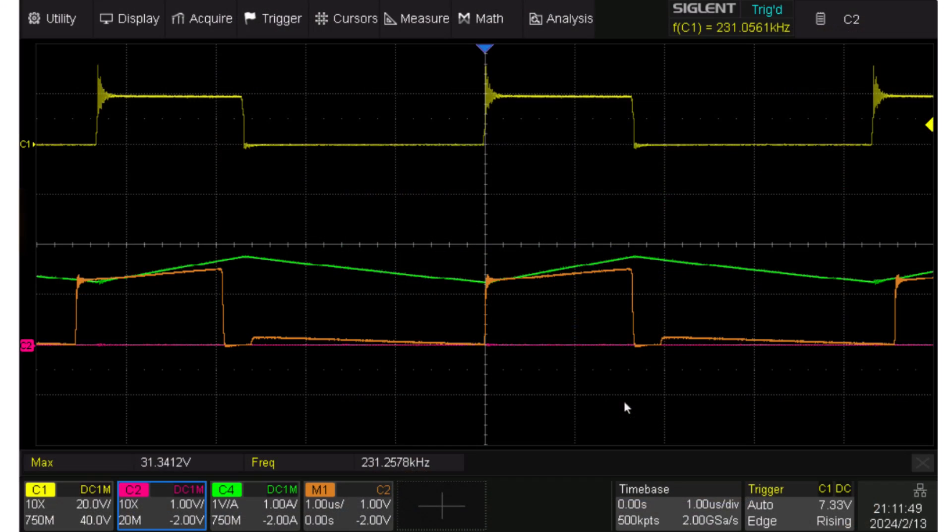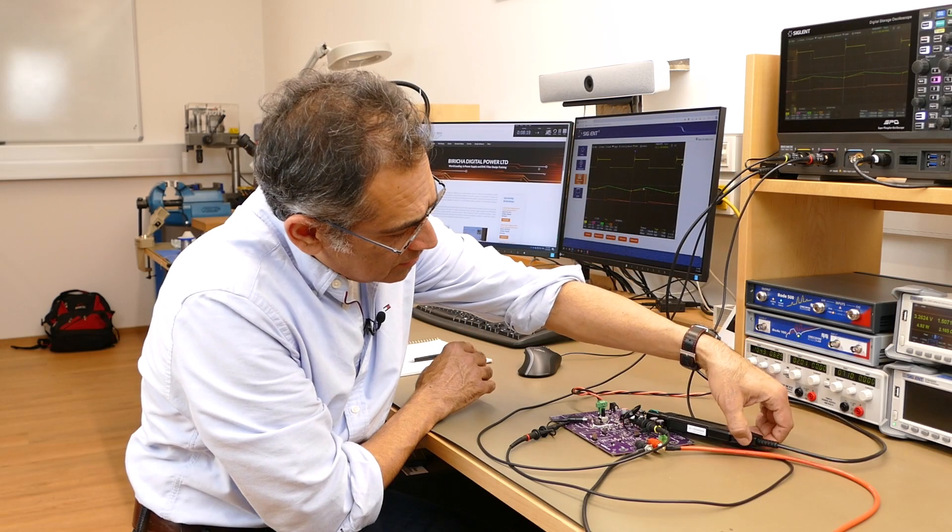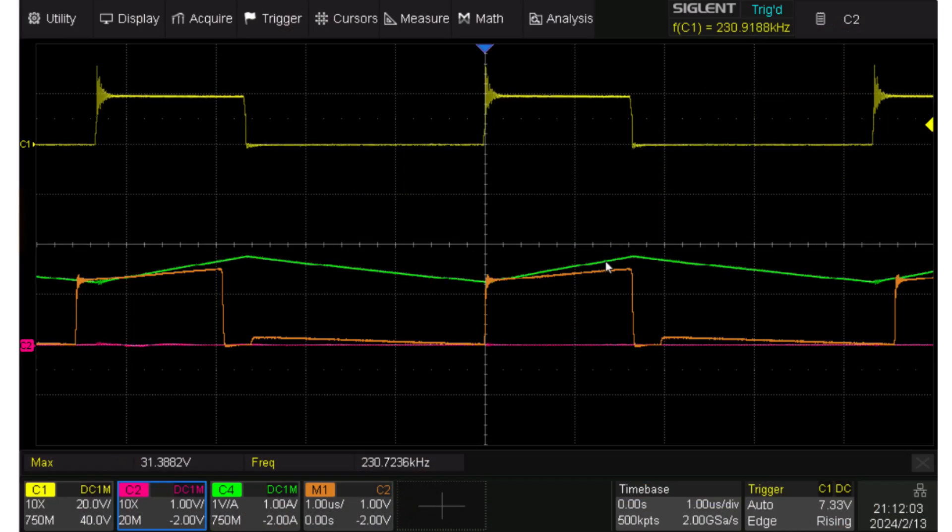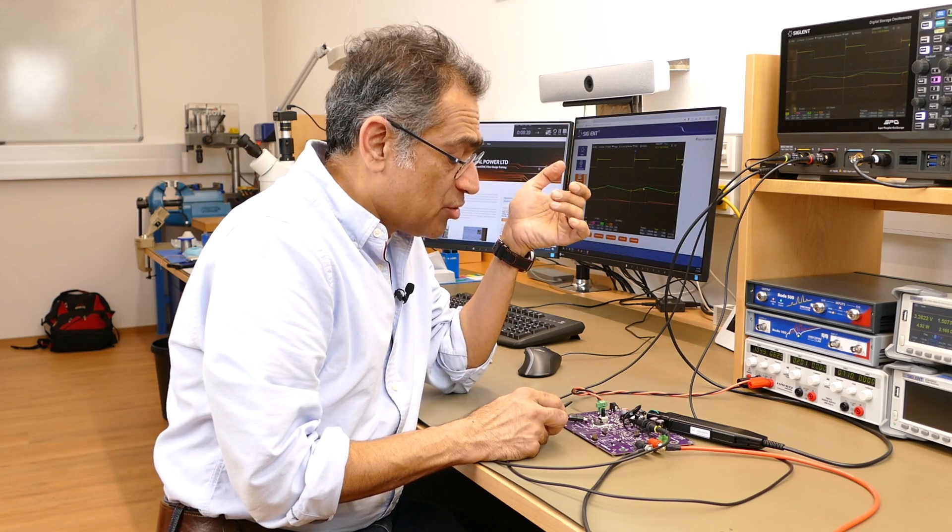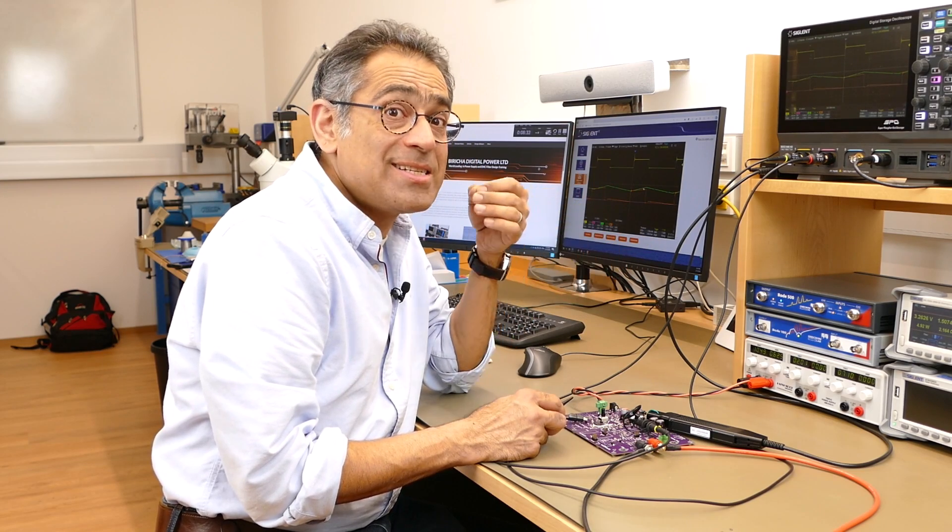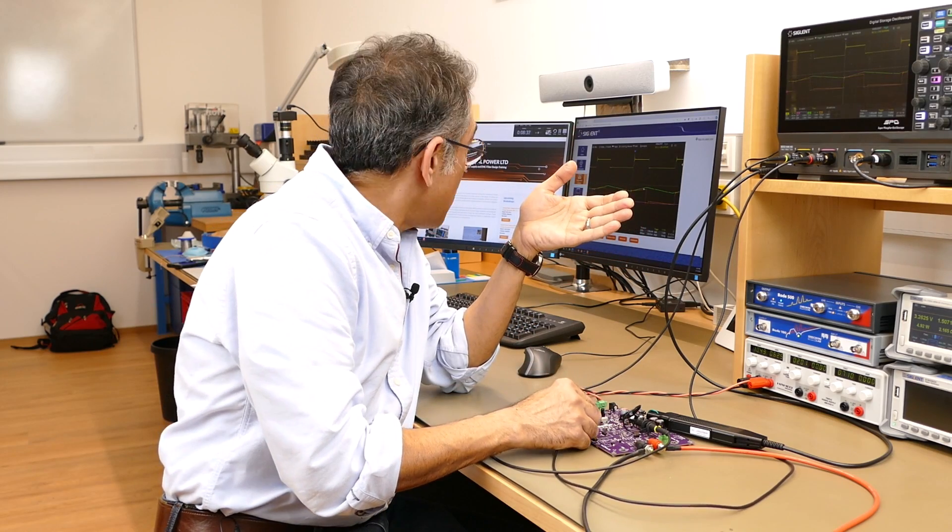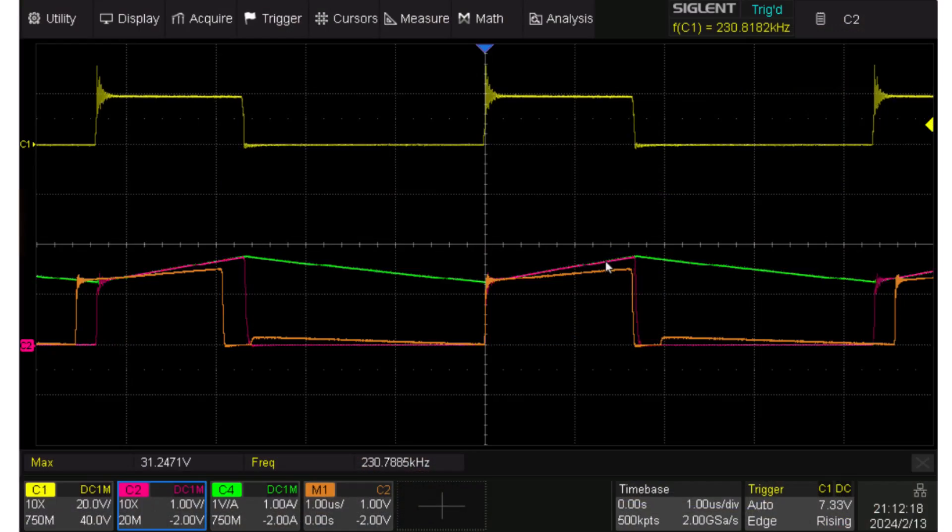Again, the yellow trace here is the duty. I'm just using that to trigger. The green trace is the real inductor current measurement here, and the pink trace is now the voltage across the burden resistor. However, now I've got a 1 to 100 transformer with a 100 ohm burden resistor. So still, it's 1 volt per amp, and now, if you look, I get almost an exact beautiful replica here, as you can see.